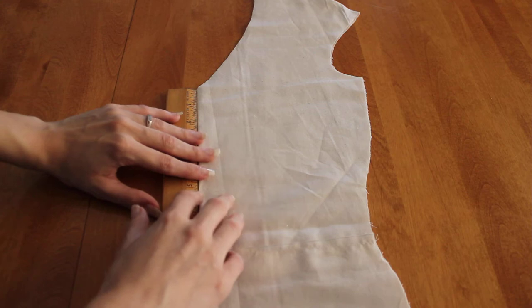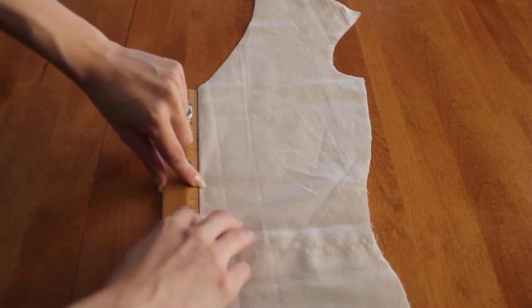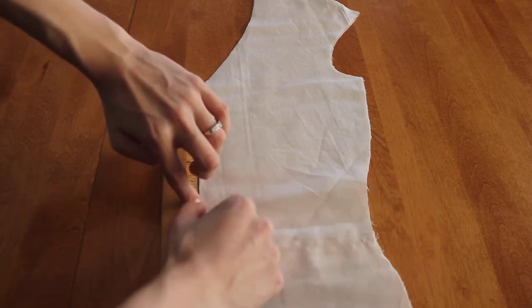On mine I have it down to 5 inches. And then from where you want that V you're going to add another inch and then you're going to draw a line across your pattern.